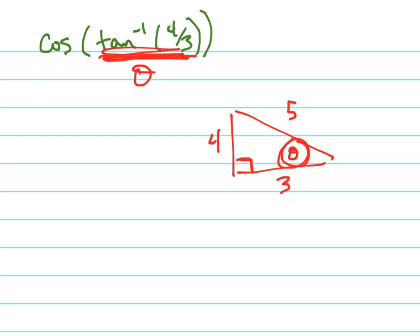And now the question is, what's the cosine of that angle? Well, now let's just look at the triangle and say, what's the cosine? The cosine is adjacent divided by hypotenuse. So this equals 3 fifths.